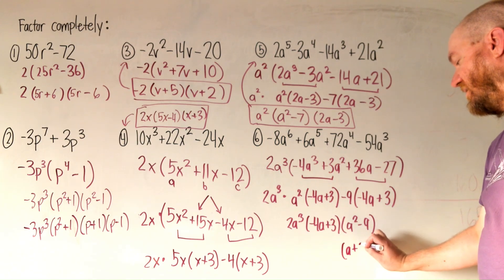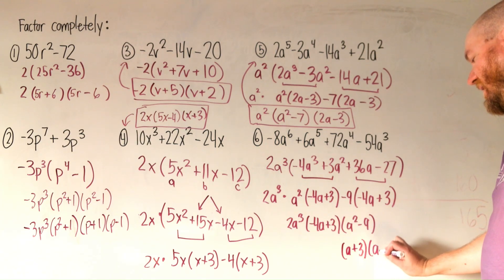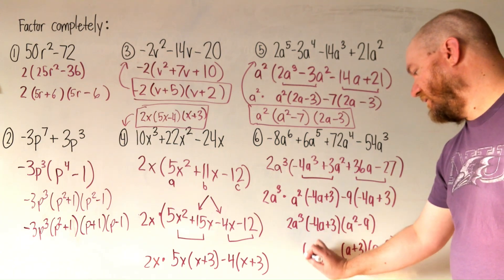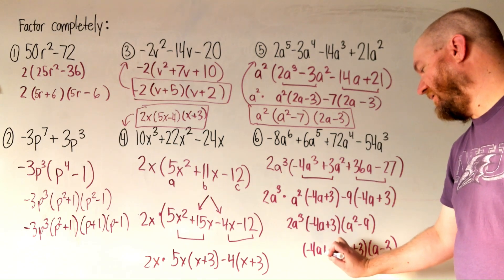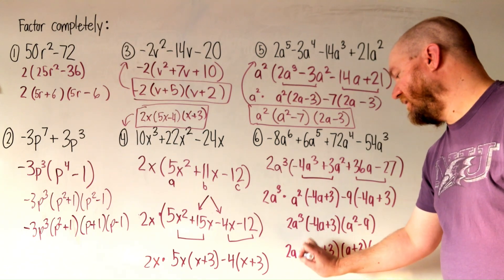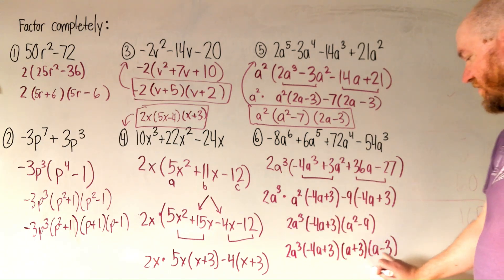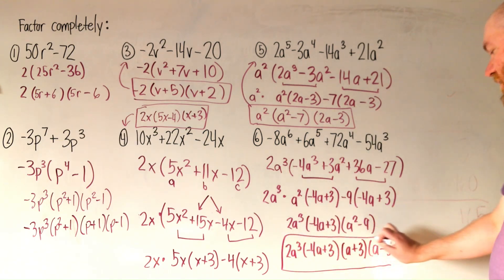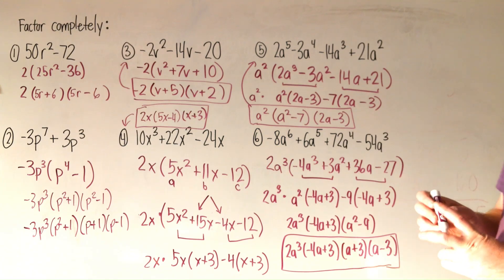That's the difference of two squares. a plus 3, a minus 3. So this whole thing ends up having four different factors here. So the answer to question 6 is all of that. And that's it for factoring.